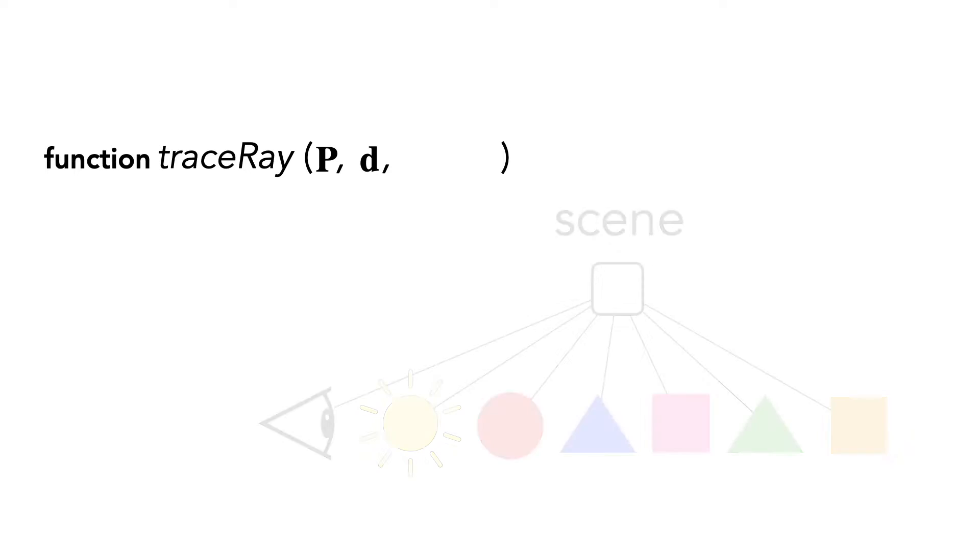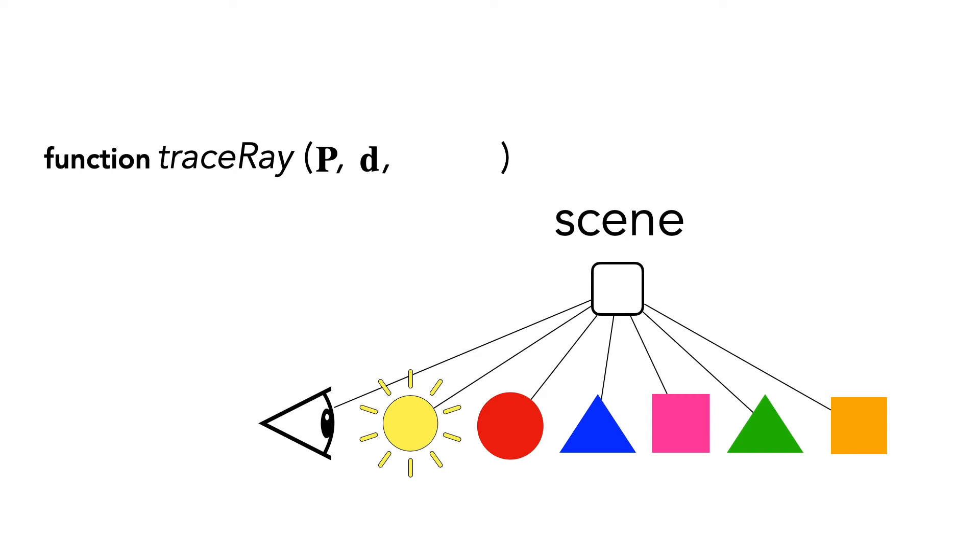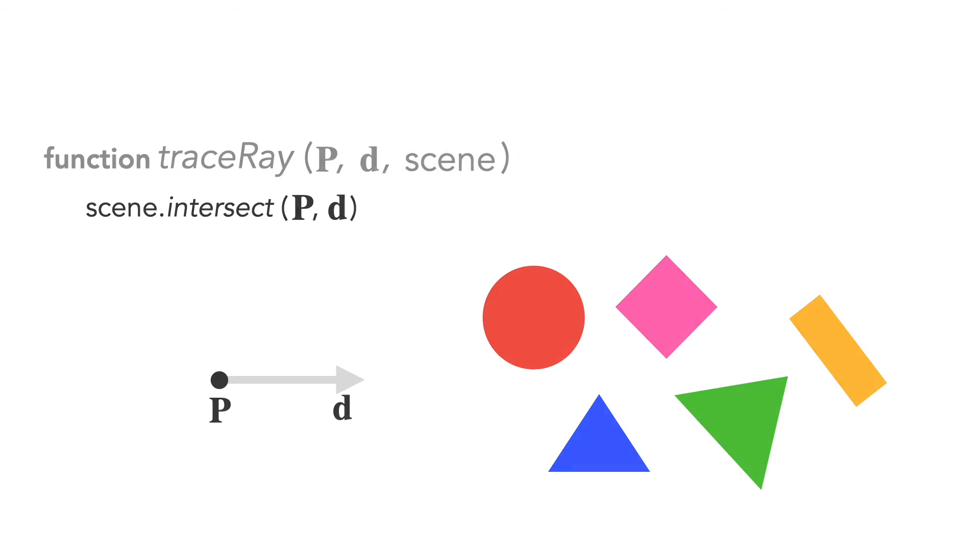This information is contained in the scene graph which has all the objects, lights and camera parameters. Trace ray computes the first intersection with the scene. Calculating these intersections can be quite involved. Here we only have five objects but real scenes can have millions. For now let's just assume that this intersect function is given to us.